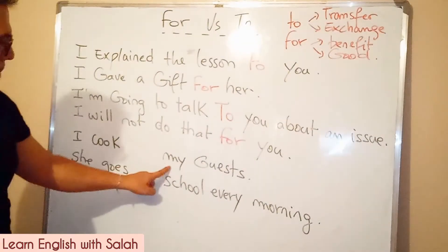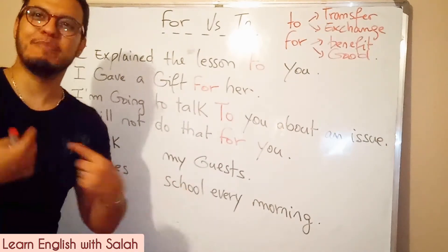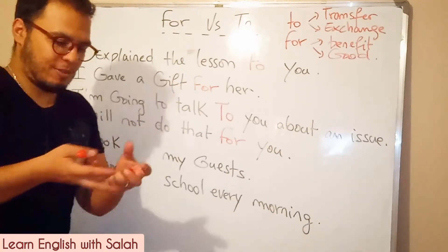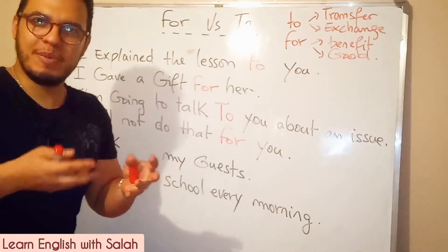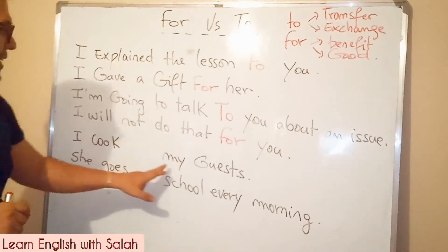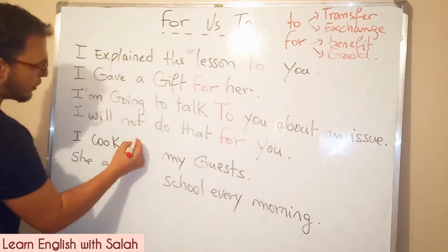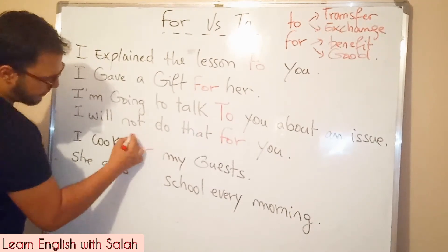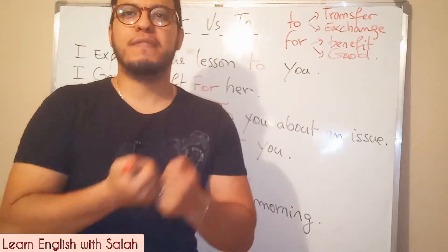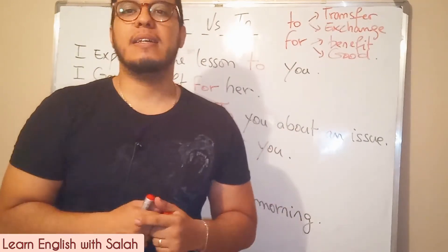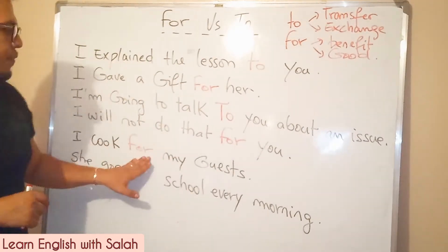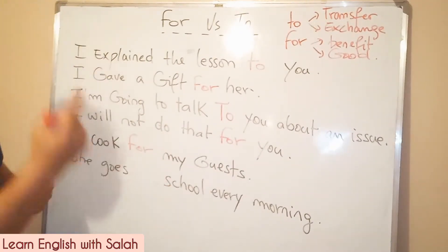'I cook my guests' — I'm not going to cook my guests! I'm not going to take my people and cook them on the stove — no, no, no! So it will be: I cook for my guests. Who's going to benefit from the meal? My guests. So: I cook for my guests, not 'to my guests.'